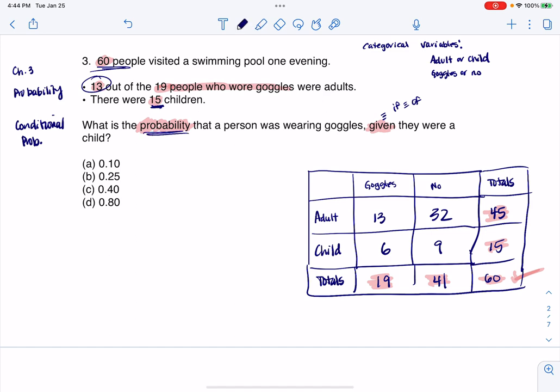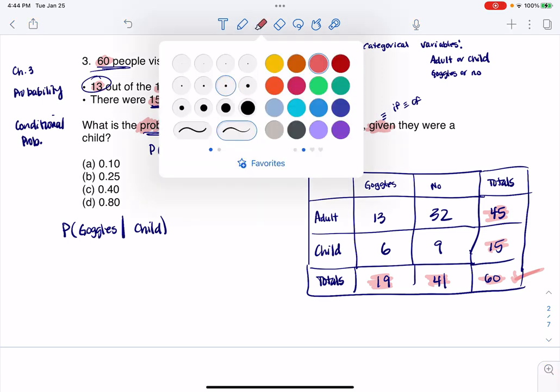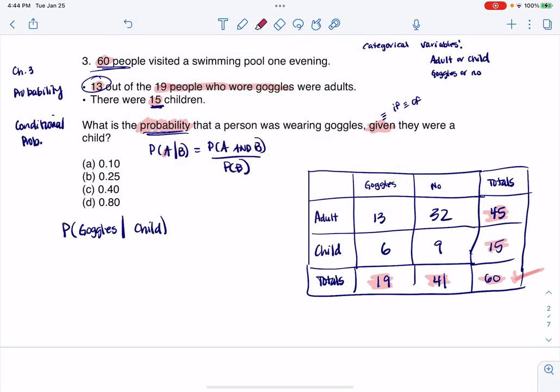Let's get this probability going. I need P - the probability that someone was wearing goggles given they were a child. Now I have a conditional probability formula, formula two, that I can always use. I'm gonna write that here. Let me color code this because I think that helps. Playing the role of A right now is goggles.